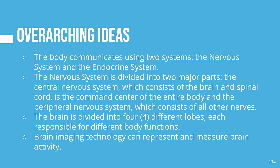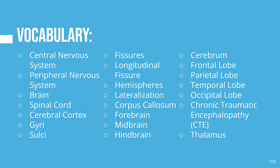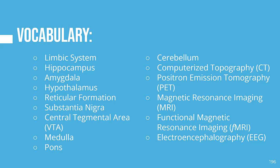This video has four overarching ideas. The body communicates using two systems, the nervous system and the endocrine system. The nervous system is divided into two major parts: the central nervous system, which consists of the brain and spinal cord, is the command center of the entire body, and the peripheral nervous system, which consists of all other nerves. The brain is divided into four different lobes, each responsible for different body functions. Finally, brain imaging technology can represent and measure brain activity. The topic of this video will focus on vocabulary you can find in the Google Slide presentation and in the Psych 101 Key Vocab Google Doc, both linked in the description box below.